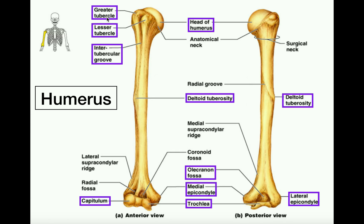Now the humerus has what we call tubercles — there's a greater tubercle and a lesser tubercle. The rule is that the greater tubercle is always opposite the side of the head of the humerus. So once you locate the head, the greater tubercle is just on the opposite side right here; it's the most lateral of them. And then the lesser tubercle is right in the middle, between the greater tubercle and the head.